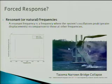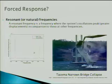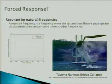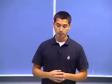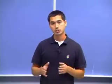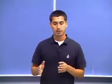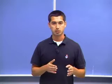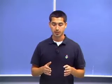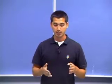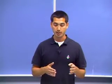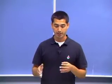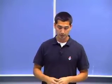The Tacoma Narrows Bridge is another example of where resonant frequencies can be detrimental to a system. As you can see, it caused the collapse of the bridge because the winds swayed it at a certain frequency that hit resonance, and the displacements amplified and caused it to eventually collapse.